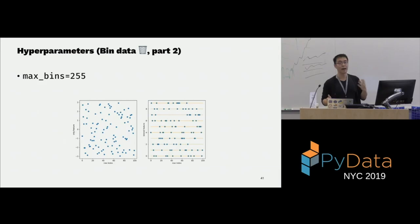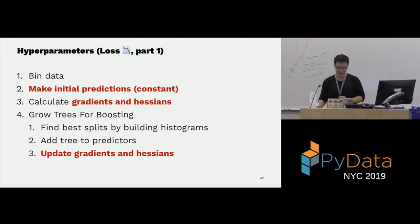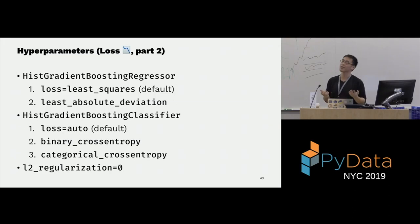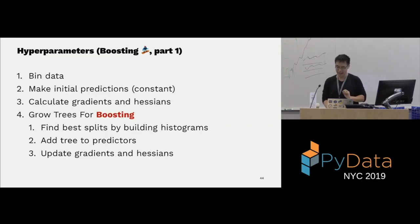For the binning of the data, we have max_bins — the number of bins. For the loss function: the regressor has two options as described before. For the classifier, there's 'auto', which decides for you based on your training set — binary cross-entropy for binary classification, and categorical cross-entropy for multi-class. There's also regularization.